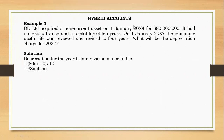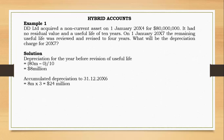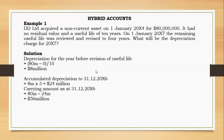The depreciation before the revision was cost 80 million minus residual value zero over 10 years = 8 million per year. From 20X4 to 20X7 is three years, so accumulated depreciation = 3 × 8 million = 24 million. Carrying amount = cost 80 million minus accumulated depreciation 24 million = 56 million. The revision took place on 1 January 20X7, and we apply it prospectively for current and future periods.